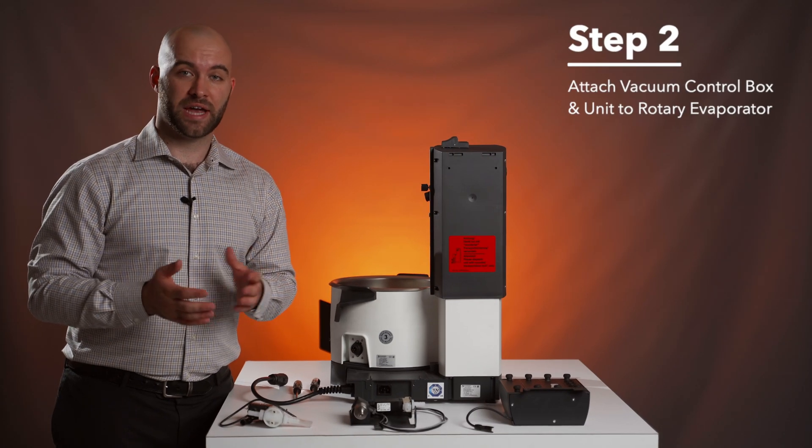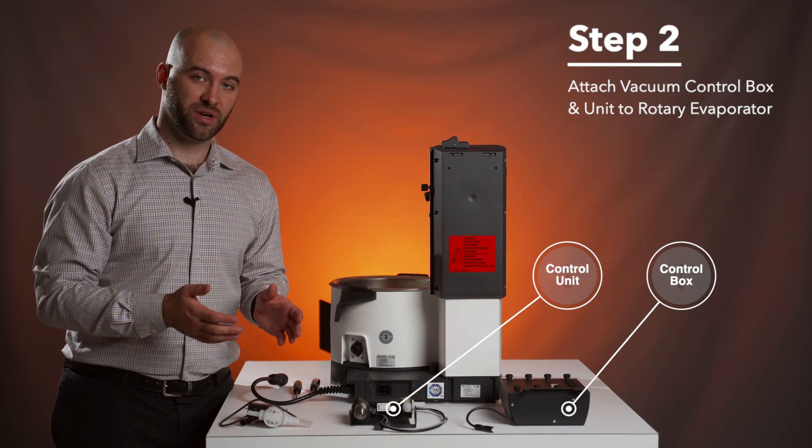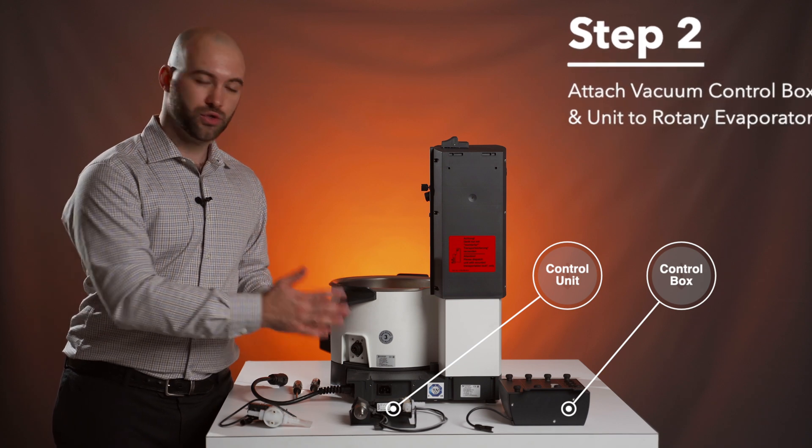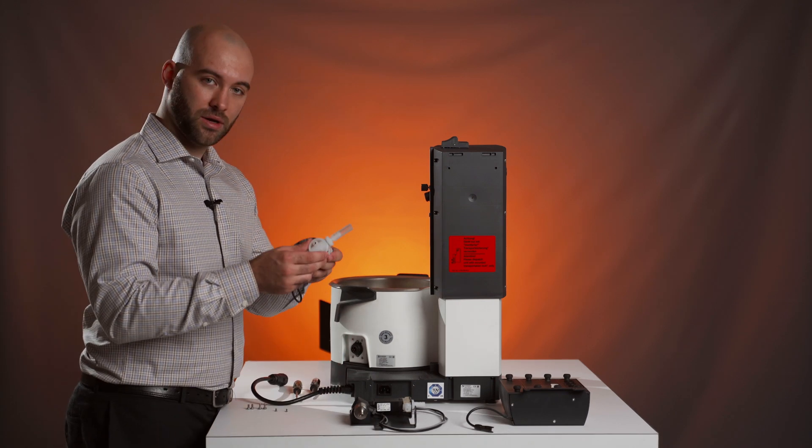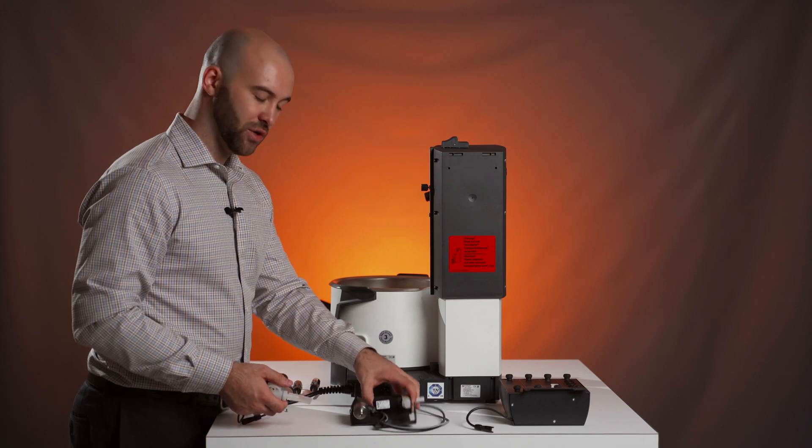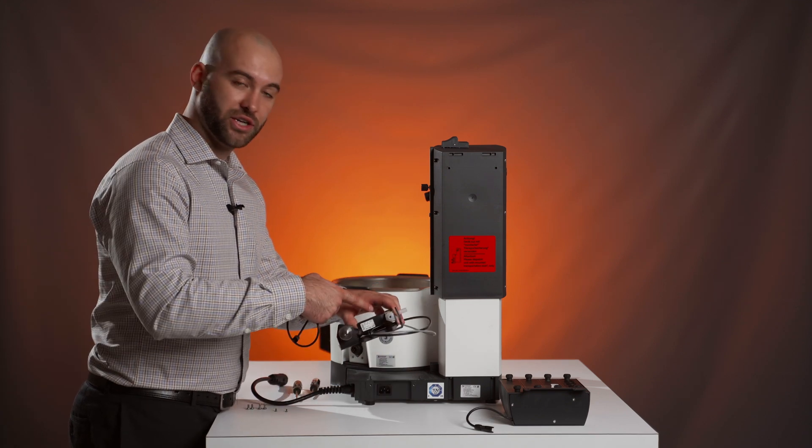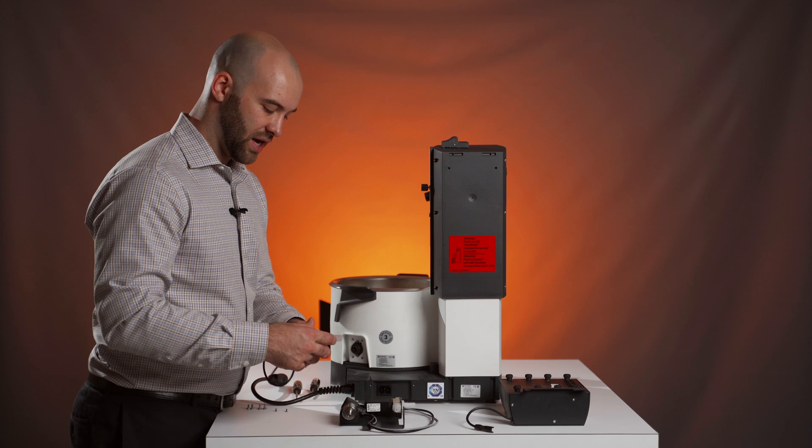Step two, we're going to attach your vacuum control box, your vacuum control unit, and your vacuum valve to your rotary evaporator. First, I'm going to take the vacuum valve and your vacuum controlling unit, which includes your vacuum sensor and your relief valve, and connect them.